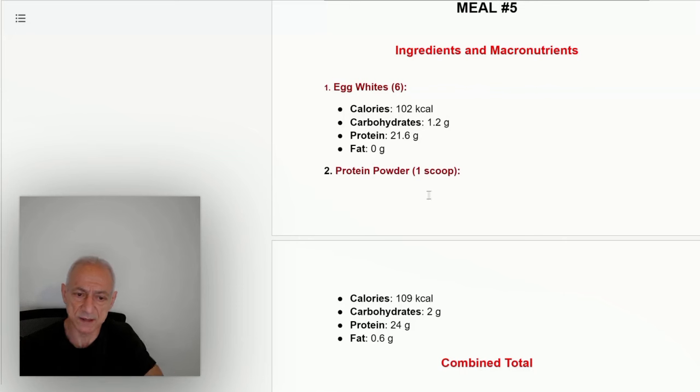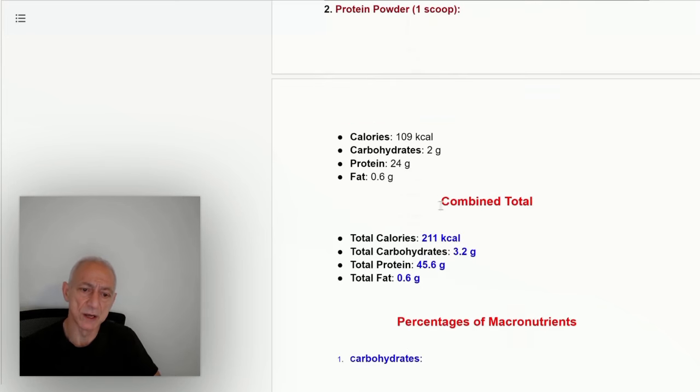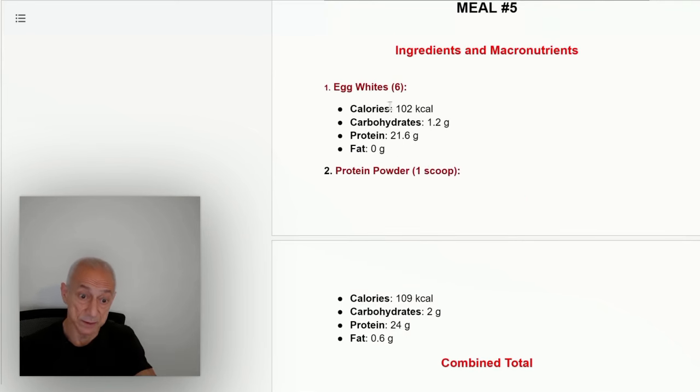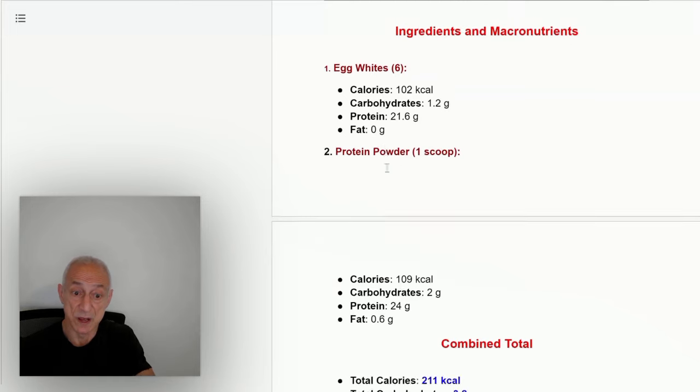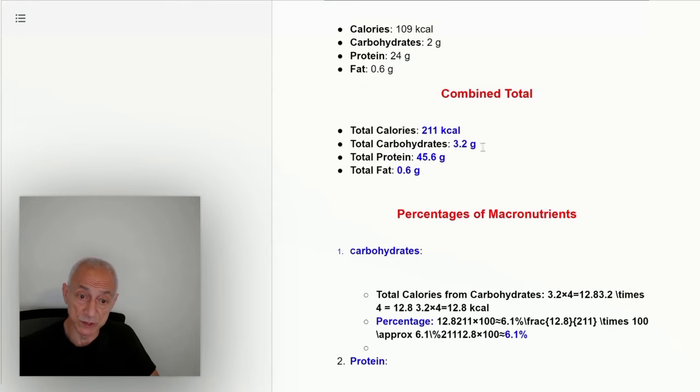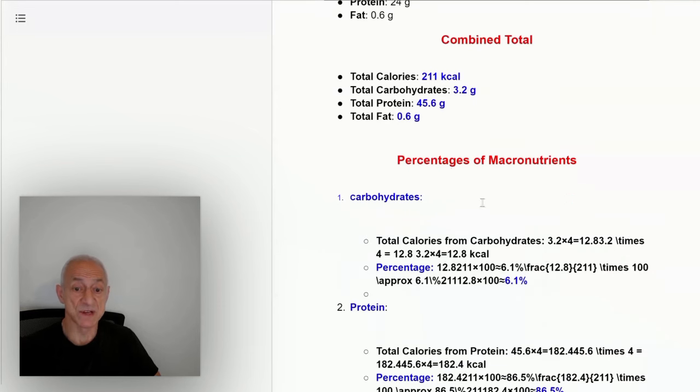I just cook the egg whites, and I drink a half a cup of water. And I put the protein powder in there that I showed you earlier, which comes out to about 109 calories, 24 grams protein powder, 21-22 grams for the egg whites. The combined total is 211 calories. Carbs is very low. Protein is 45 grams.